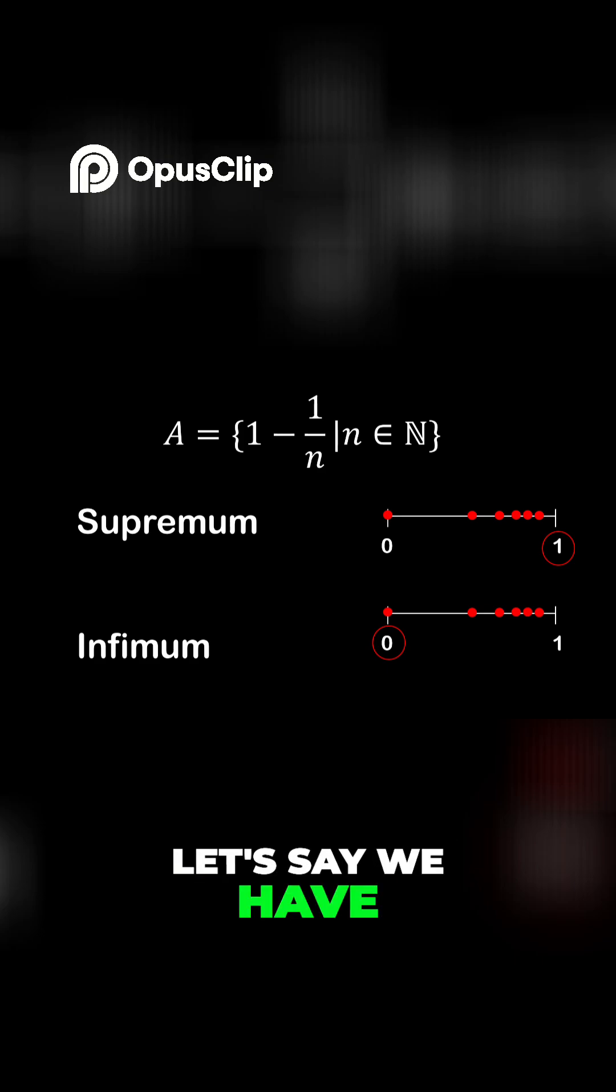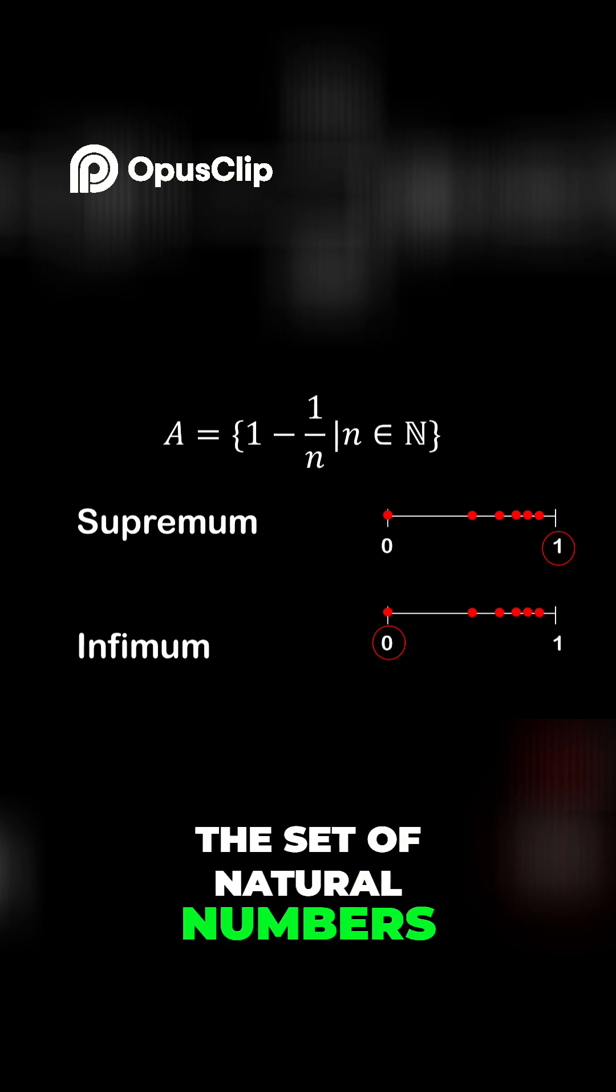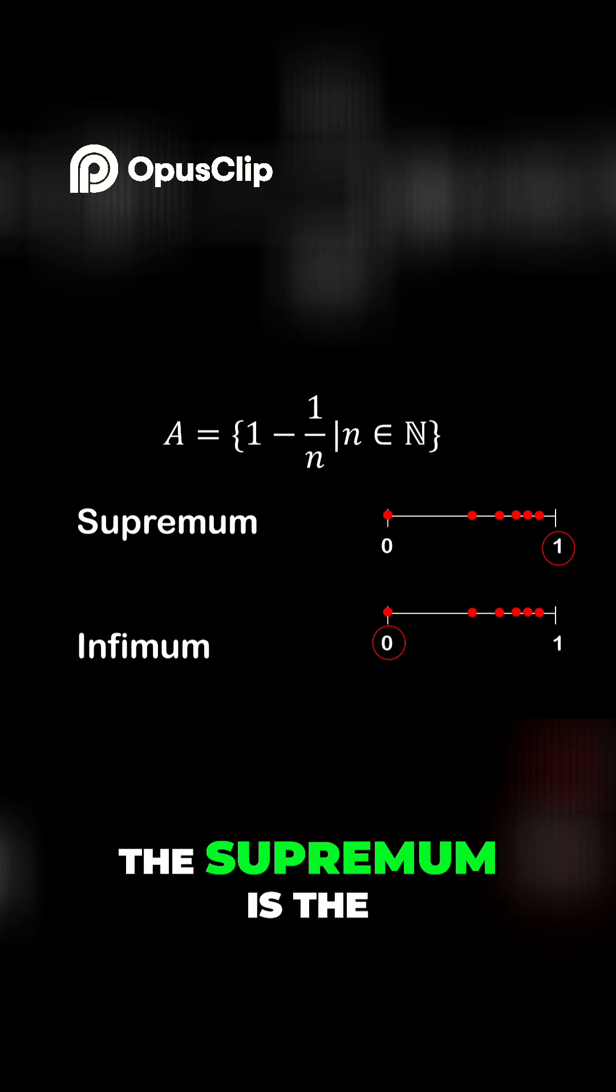Let's say we have a set A defined by 1 minus 1 over N, where N has to be in the set of natural numbers. The supremum is the maximum value that the set could take on.